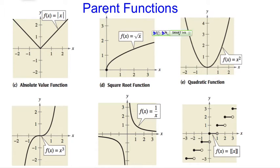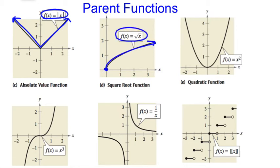The first function on the upper left is an absolute value. The shape of it looks like a V. The second one is your square root. It's like half of a parabola. The next one is the quadratic. The shape looks like a U.